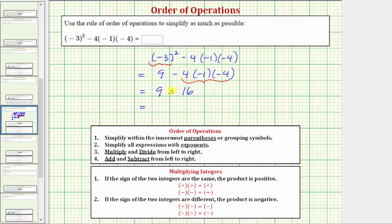We have one operation left. Nine minus sixteen equals negative seven. So the given expression simplifies to negative seven or we can say the expression has a value of negative seven.